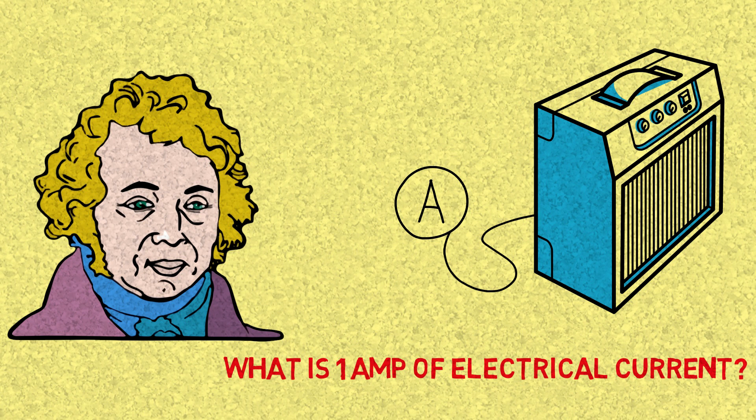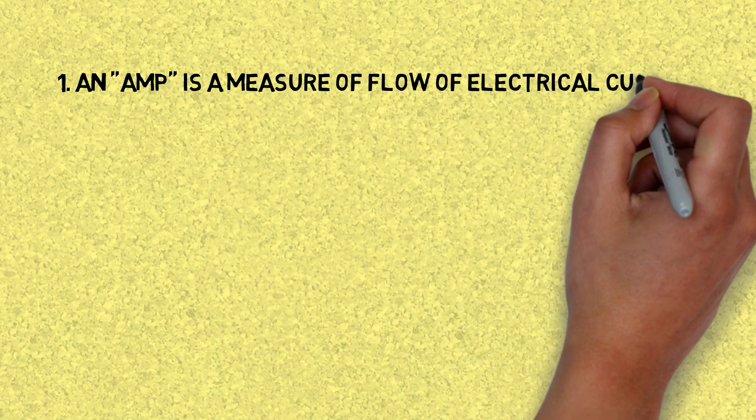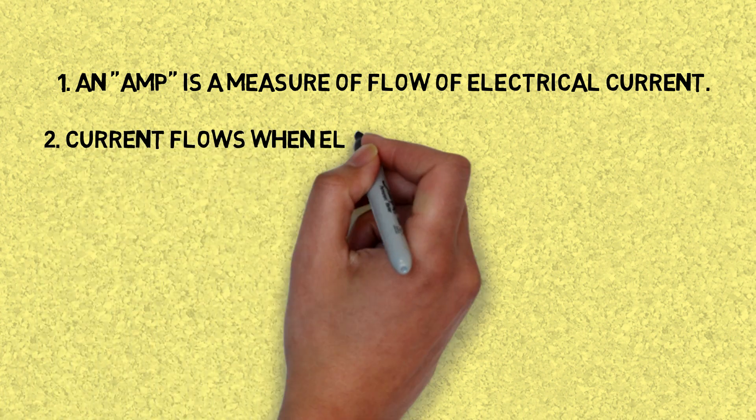So for this to be clear, let's go through a few basic easy things that are going to help us out. Number one, an amp is a measure of flow of electricity or electrical current. But how does the current flow? That takes us to number two.